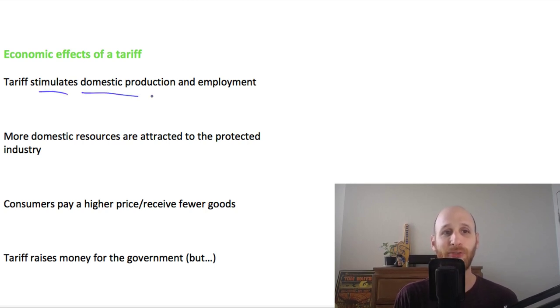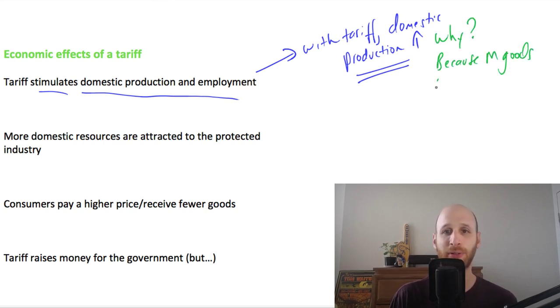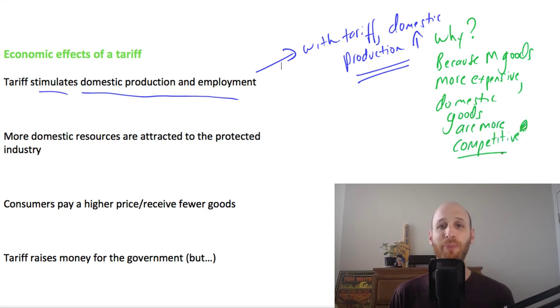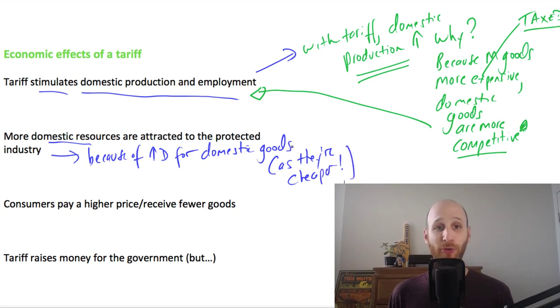The idea here is firstly that the tariff will stimulate domestic production and employment. This is because with the imposition of a tariff, domestic production is going to increase. Why? Because imported goods are more expensive, they are now taxed, so domestic goods are more competitive. They're cheaper, so they're going to be bought more, so they're going to need more resources and workers. If we've got a situation of greater demand for domestic goods, then they're going to need more resources. So more domestic resources are attracted to the protected industries because there is an increase in demand for domestic goods because they're cheaper, because imported goods are more expensive with the tariff on.